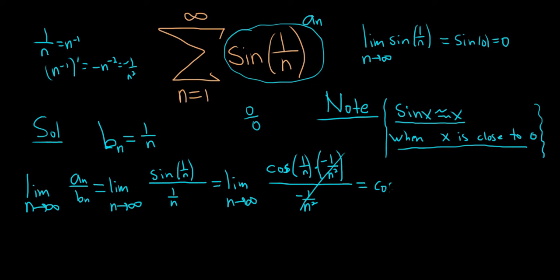Take this limit. You get the cosine of 0, which is 1, which is finite and positive. So the limit comparison test applies.